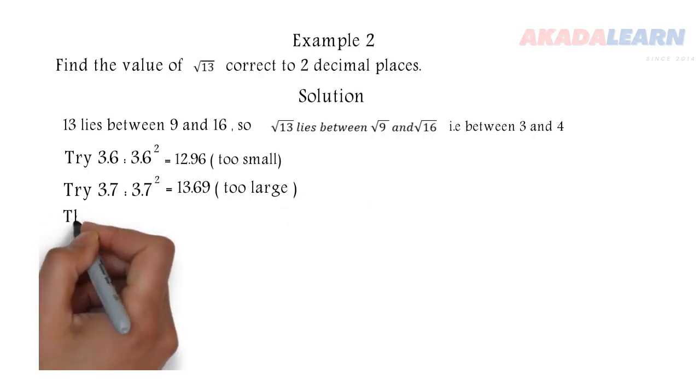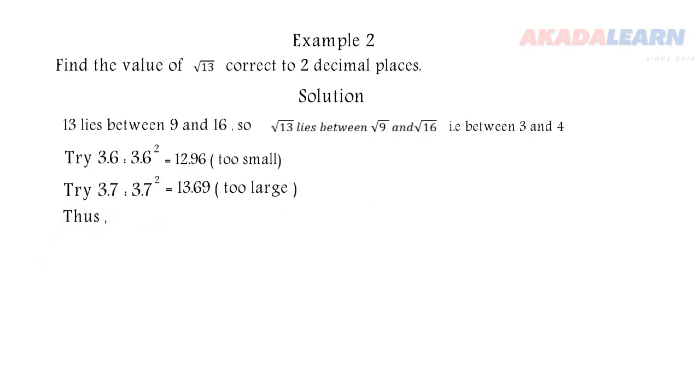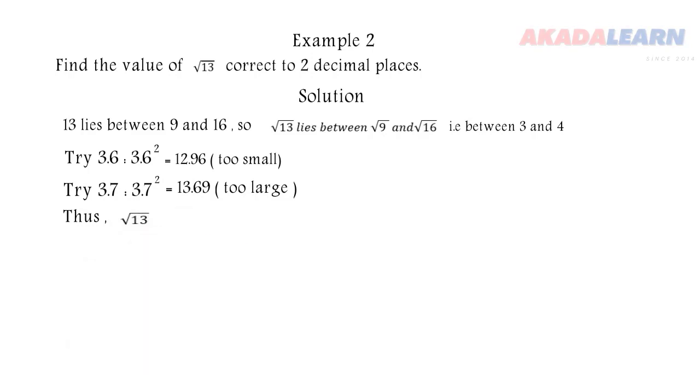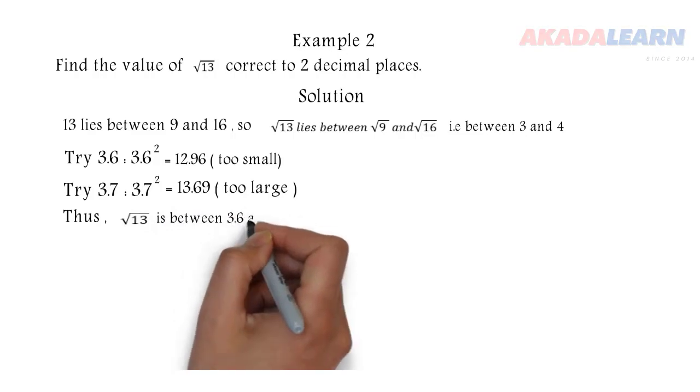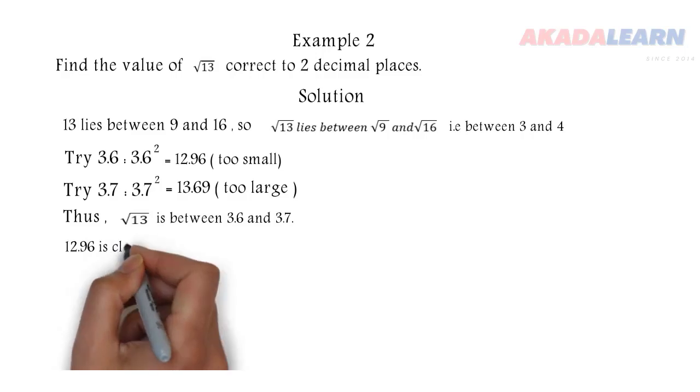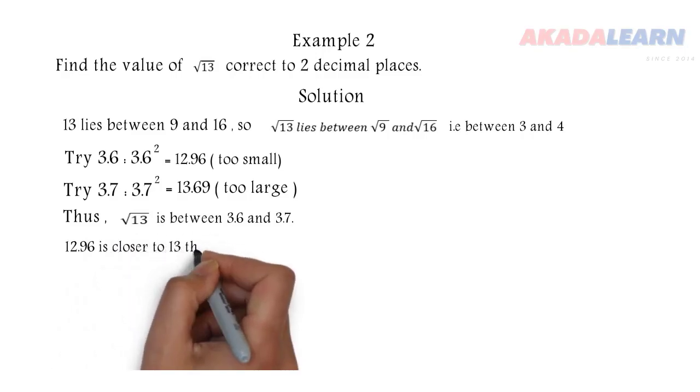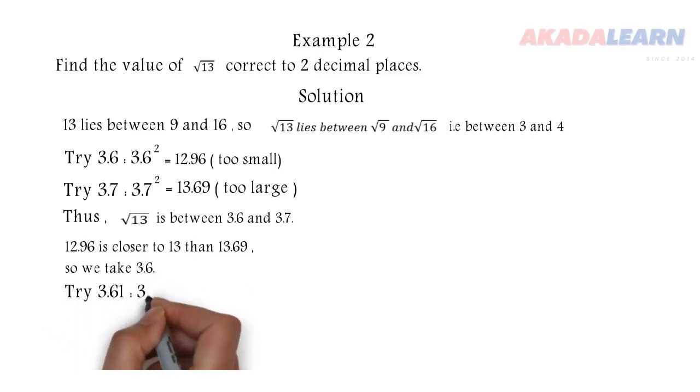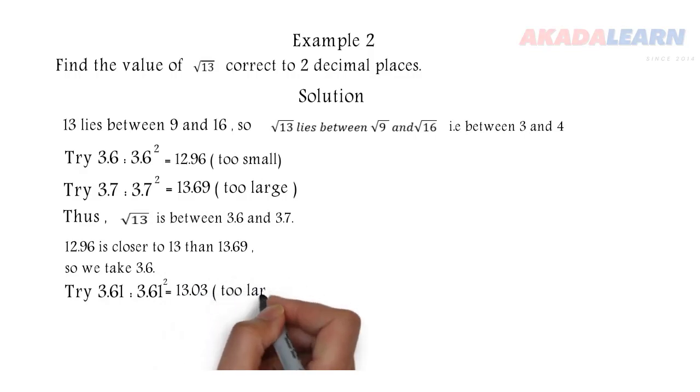Meaning that the square root of 13 is going to lie in between 3.6 and 3.7. Which is what we are seeing there. So square root of 13 is between 3.6 and 3.7. But 12.96 is closer to 13 than 13.69. So it means we are going to take this 3.6. So again we add a number to the end. So say 3.61 square, which is 13.03. You can also say this is too large, bigger than 13.